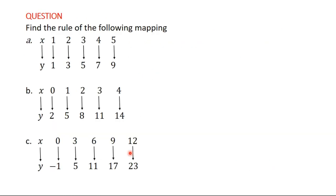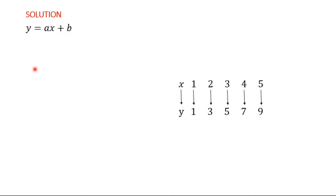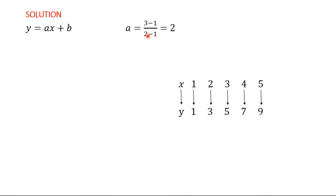So we are going to find the rule of the following mapping. We have x maps to y, and we have been given elements in the domain and their corresponding images in the codomain. First, write the general rule: y = ax + b. Now find a. We are saying that a is the constant difference of the codomain divided by the constant difference of the domain. The constant difference of the codomain is 2, and the constant difference of the domain is 1, so a = 2 over 1, which is 2.